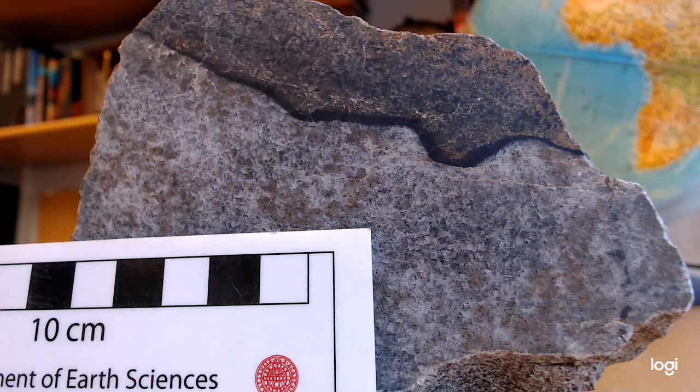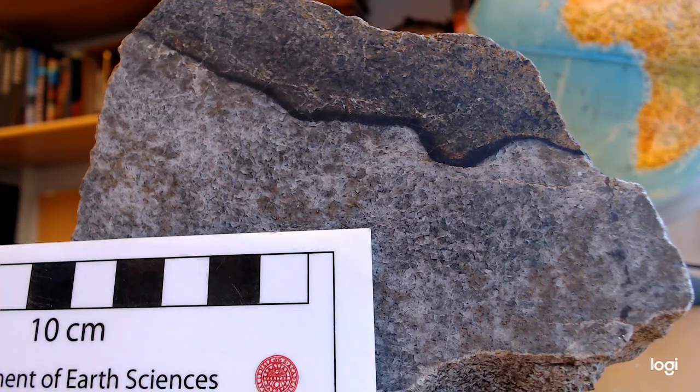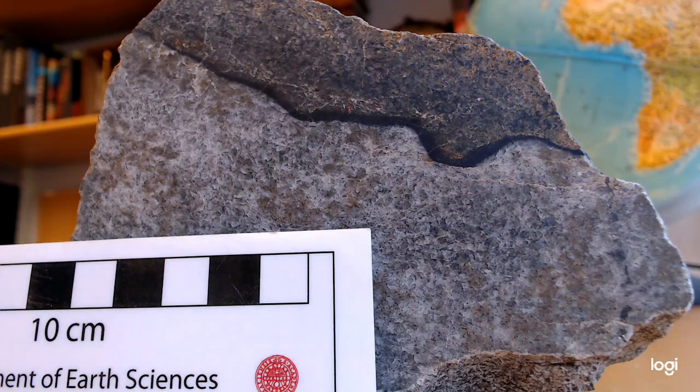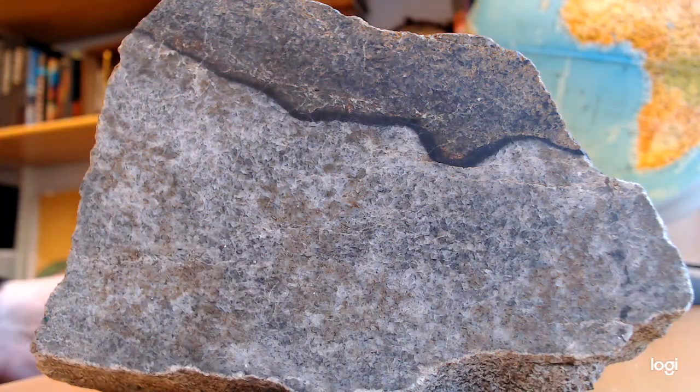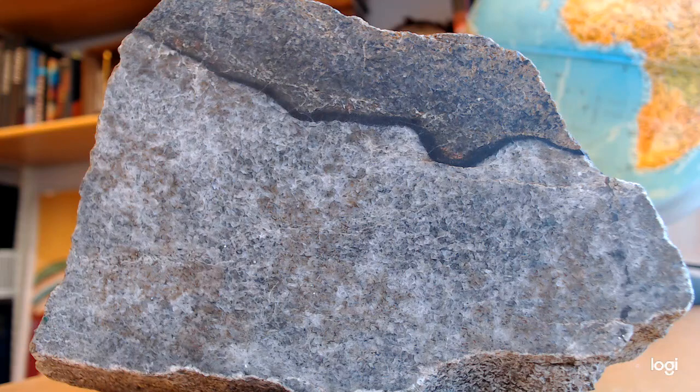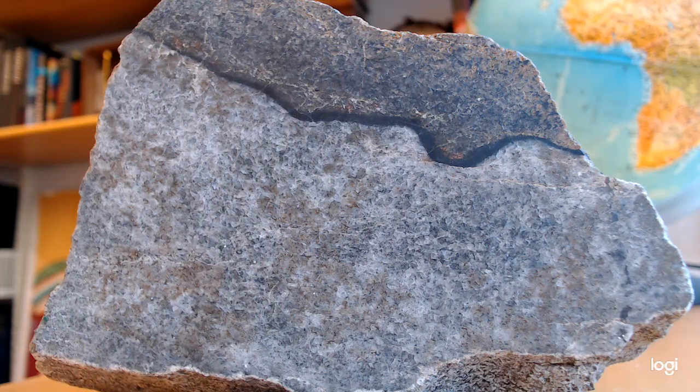It's from a layered plutonic intrusion. We talked a little bit about that in the lectures. The Isle of Rum is dominated by a tertiary layered intrusion that's about 60 million years old, and what we have here is a unit boundary.